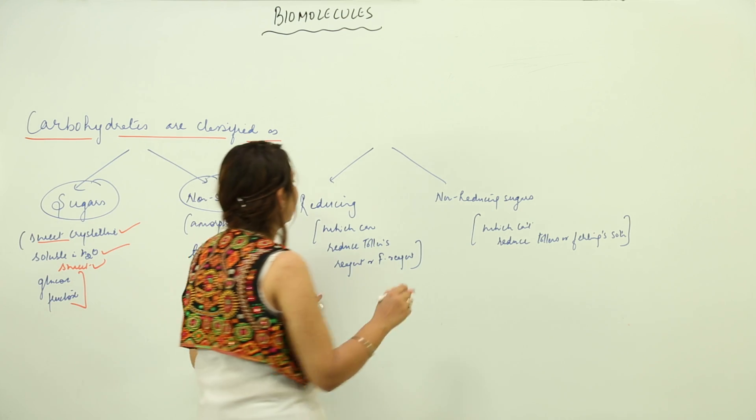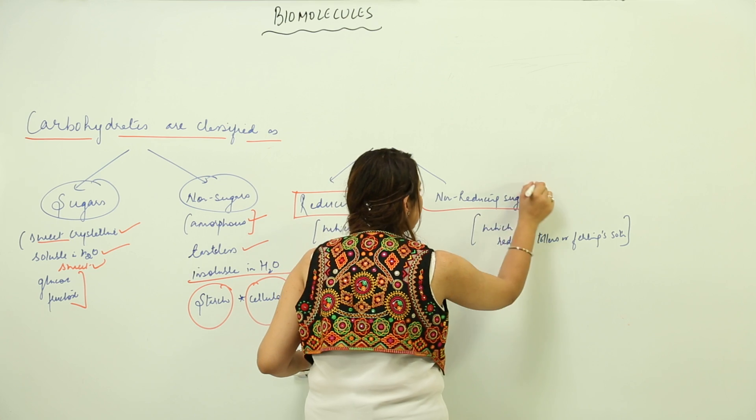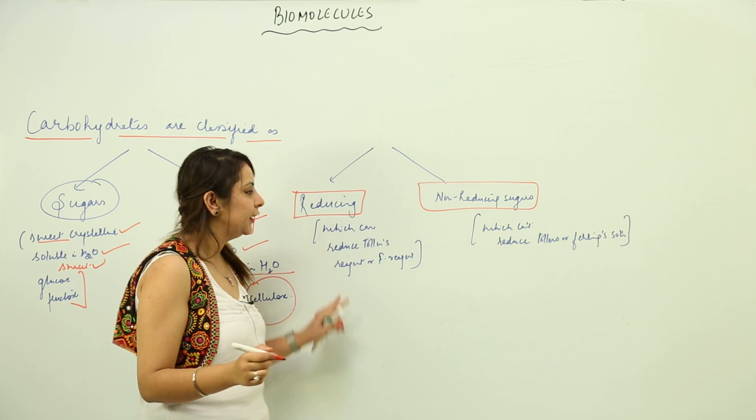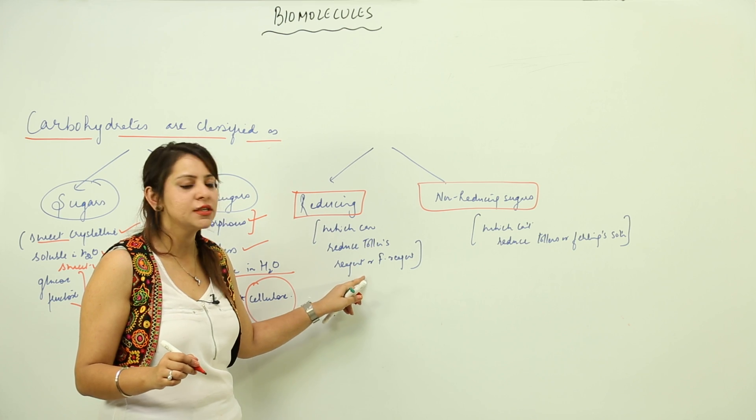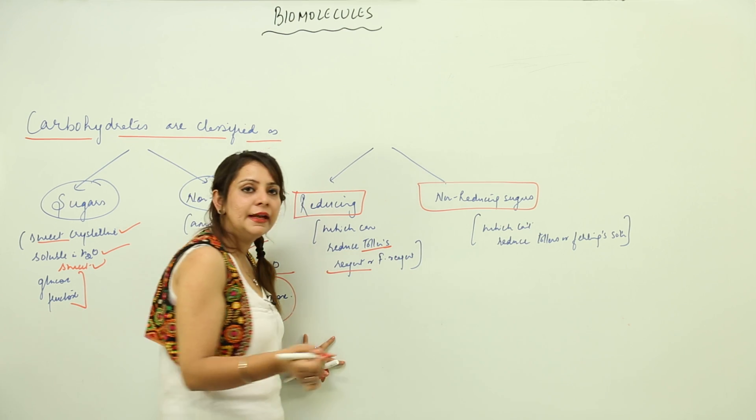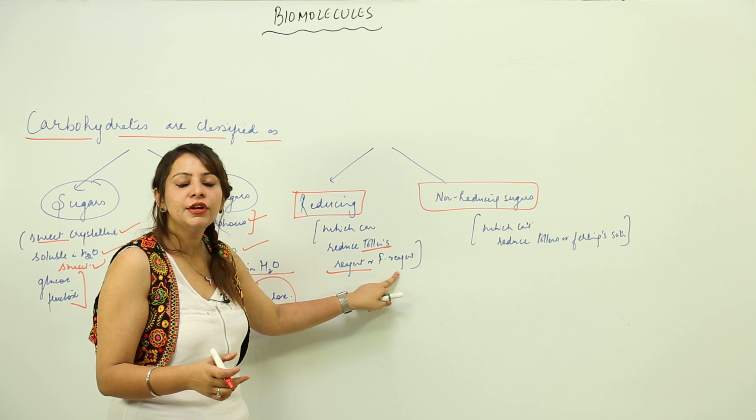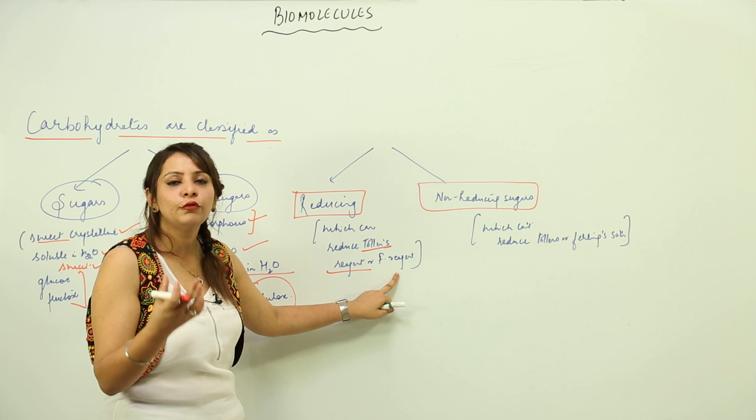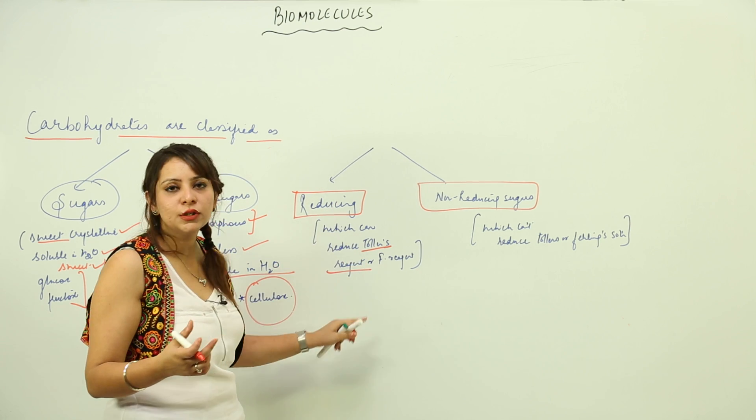We can classify sugars further into reducing and non-reducing sugars. As the name suggests, reducing sugars can easily reduce Tollen's reagent and Fehling's reagent. If it reduces Tollen's reagent, it's indicated by the formation of a silver mirror. If it reduces Fehling's reagent, it forms a reddish-brown substance—copper oxide.